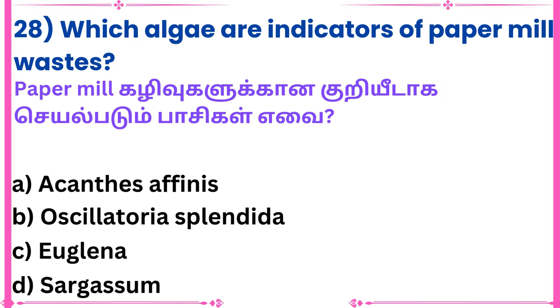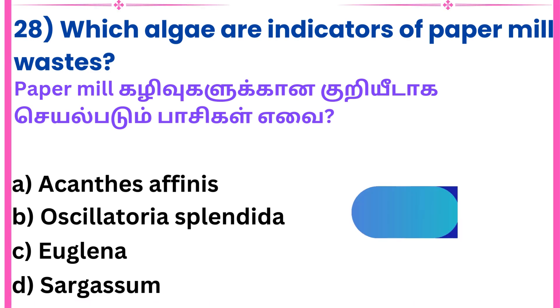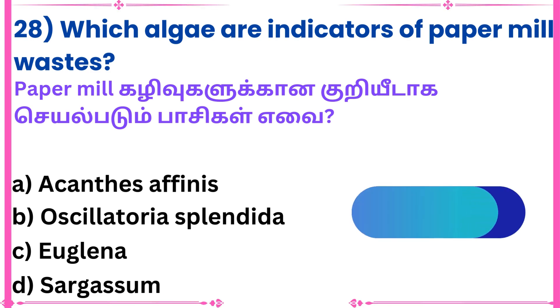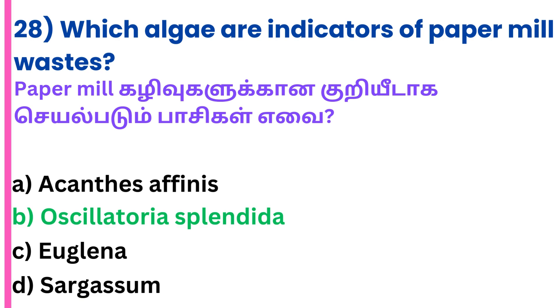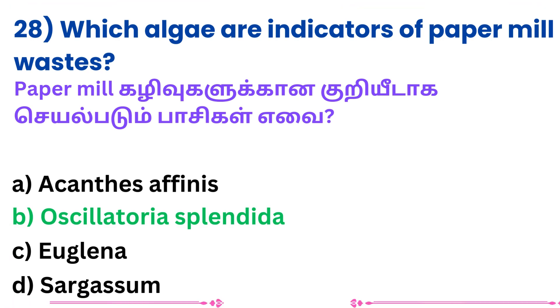28th question: Which algae are indicators of paper mill waste? Answer: Oscillatoria.